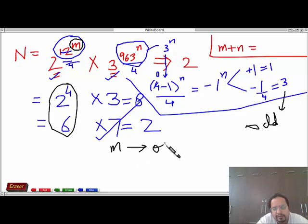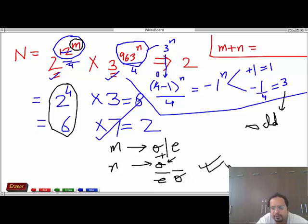m can be odd, can also be even. Accordingly, n is always odd. So when we add these two, odd plus odd is even and even plus odd is odd. So it can be odd or it can be even. You cannot uniquely determine whether m plus n will be odd or even.